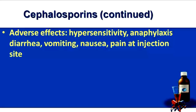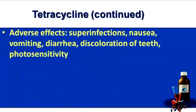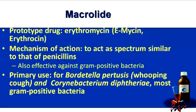With regard to tetracycline, our prototype is tetracycline, another name for which is Achromycin. It is effective against a broad range of gram-positive as well as gram-negative organisms, and it can be used for treating chlamydia, rickettsia, and also mycoplasma. Adverse effects can include super infections, nausea, vomiting, diarrhea, discoloration of teeth, and also photosensitivity.